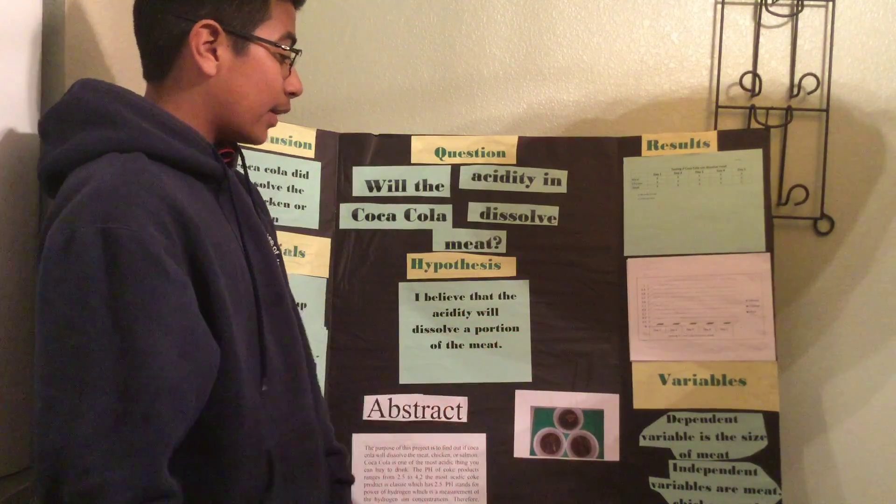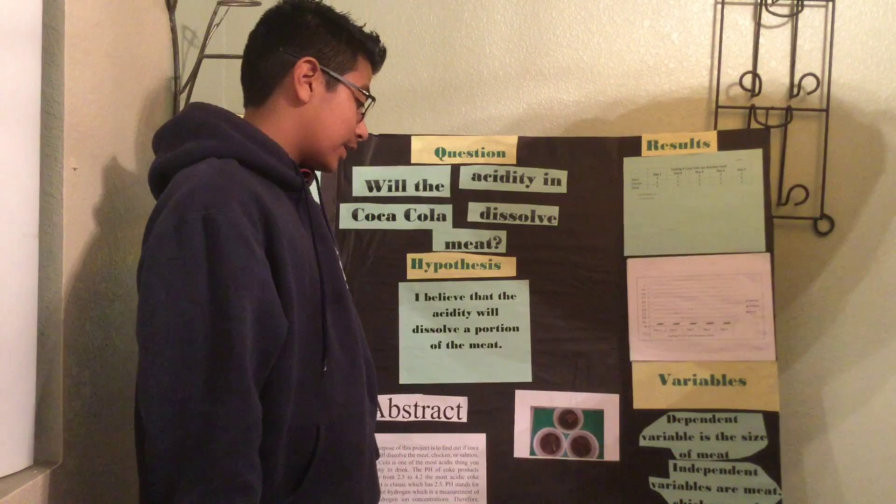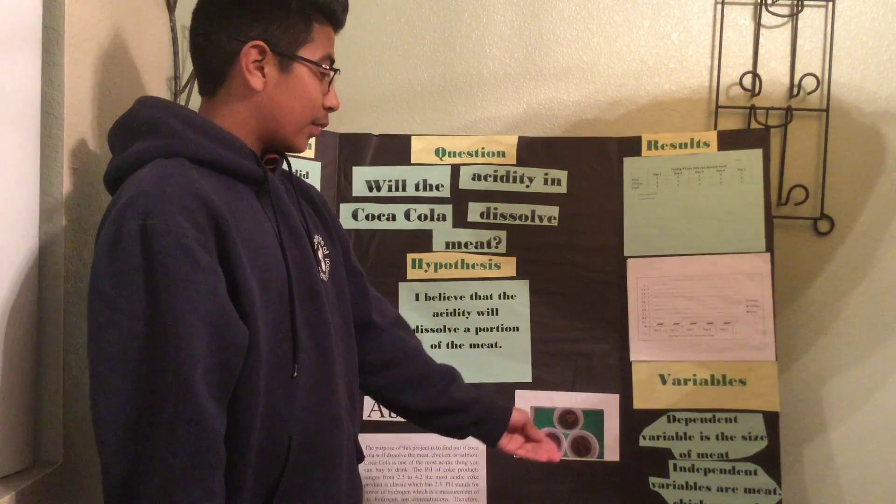The variables are: the dependent variable is the size of the meat, the independent variable is the type of meat (beef, chicken, and salmon), and the constant variable is the same amount of Coca-Cola.